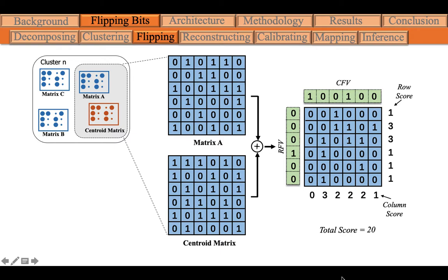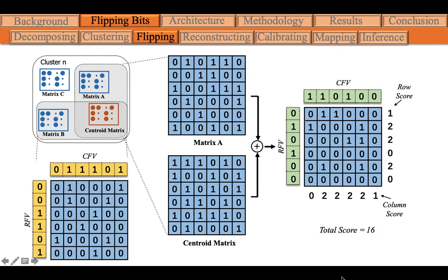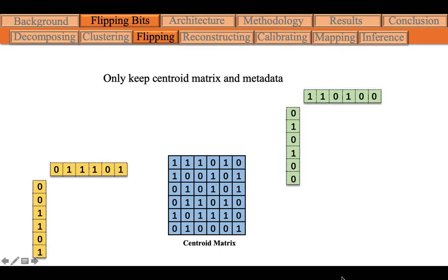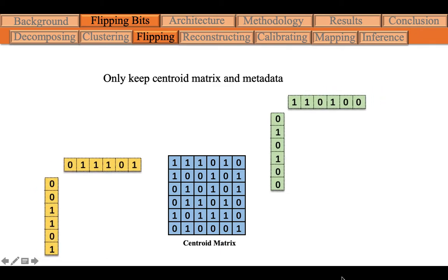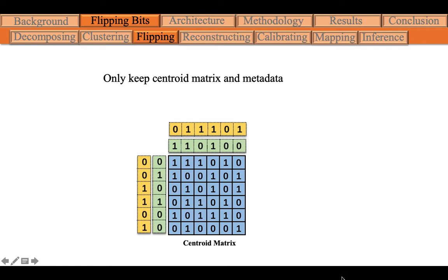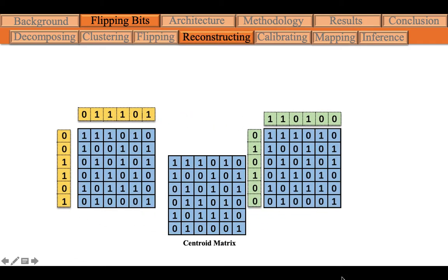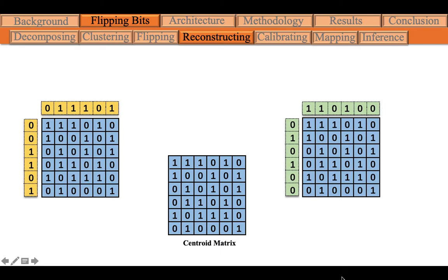One thing to note is that even when all row scores and column scores are not greater than 3, there is still a chance to further reduce the scores. For example, if we flip the second column and the second row at the same time, we can further reduce the number of mismatched bits from 20 to 16. After performing the same process on all other bit matrices in the cluster, we can discard all the original bit matrices and only keep the centroid matrix and the metadata. In the reconstructing step, we flip the centroid bit matrix according to the metadata to reconstruct all the bit matrices.